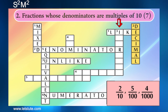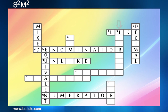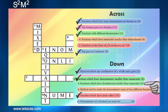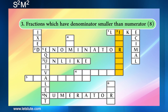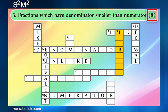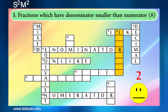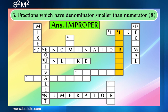And we have the first word for the third down too. So the question says the fractions which have denominator smaller than numerator. This is again from the first video only, and the answer is improper fractions.